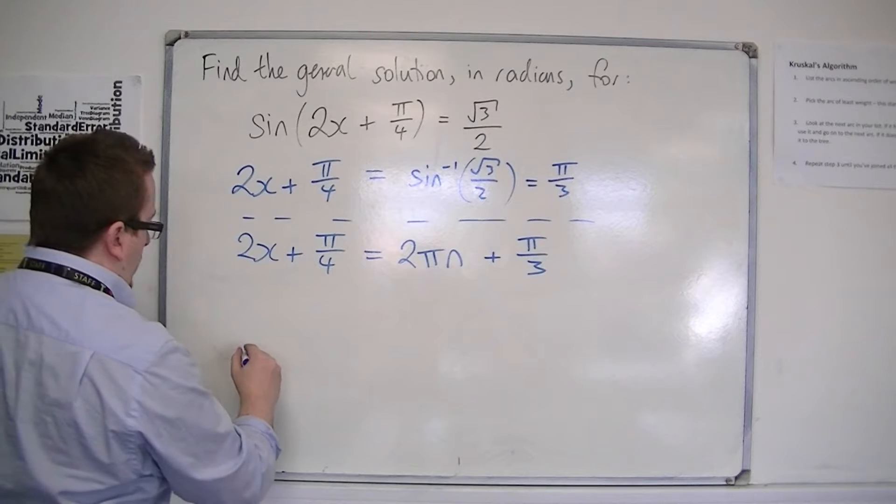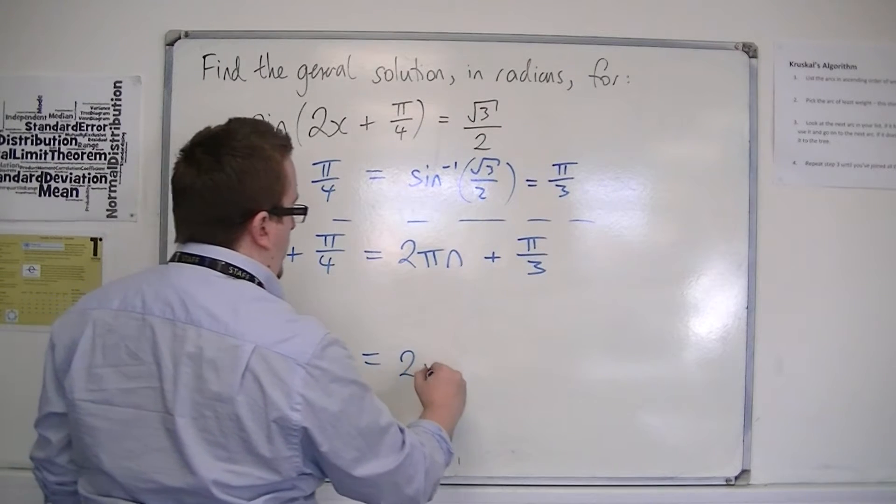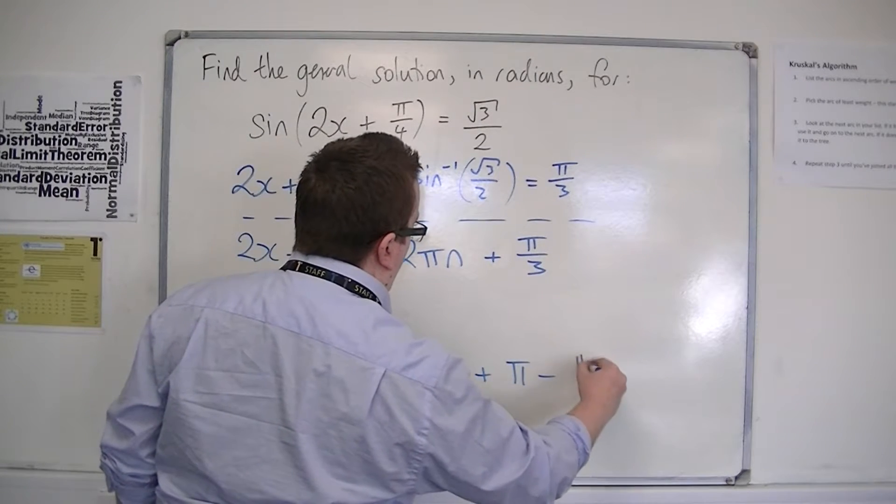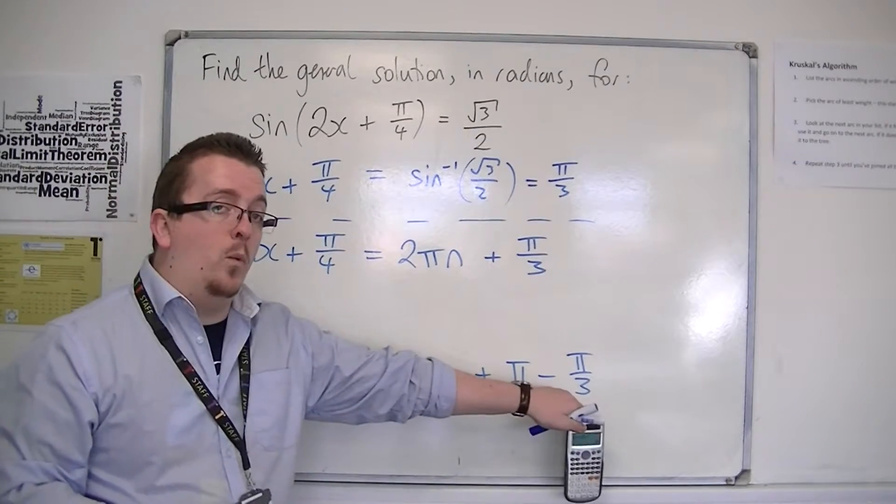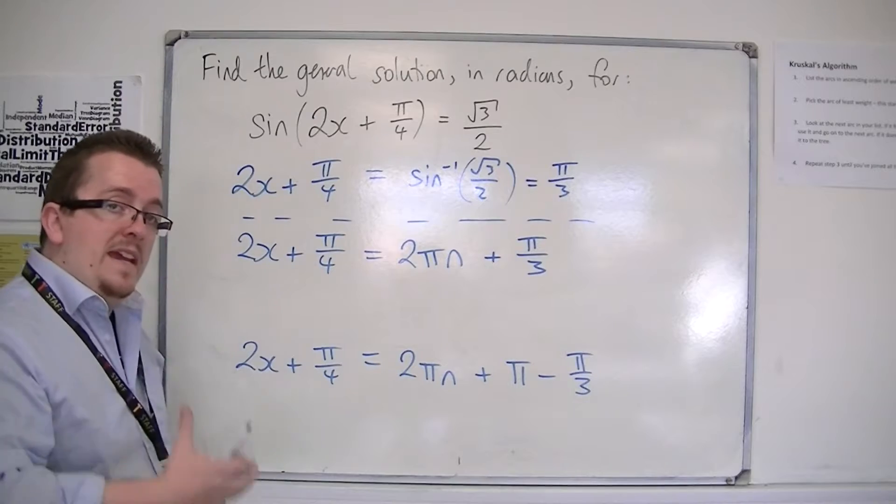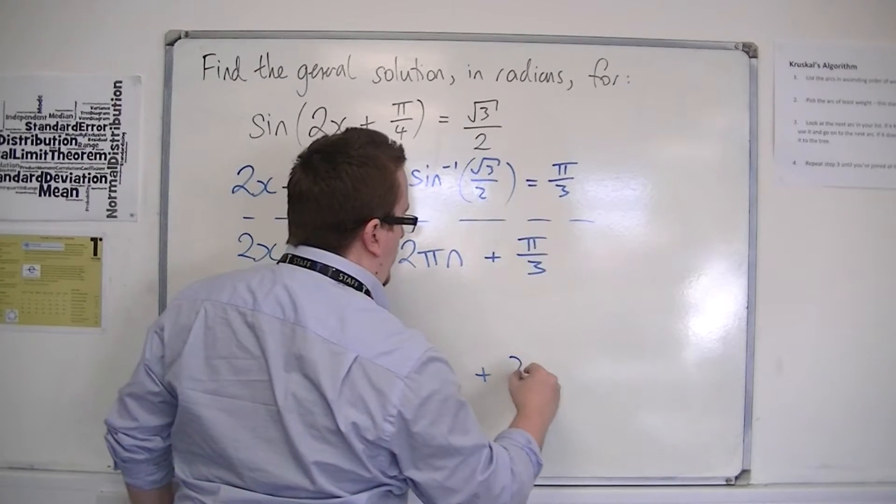Or, I've got 2x + π/4 = 2πn + π - π/3. Plus π take away alpha. π take away π/3 is 2π/3, so I'm going to replace that with 2π/3.